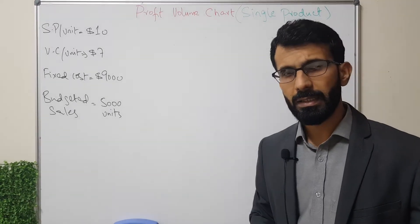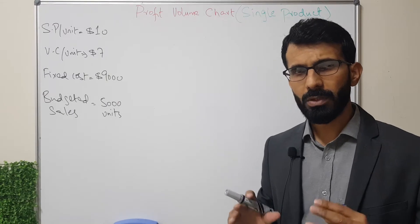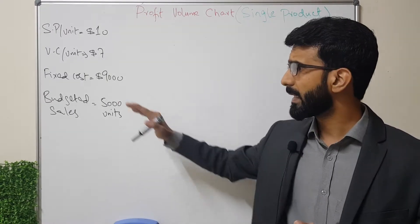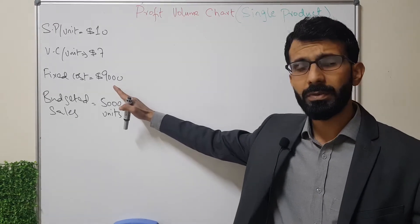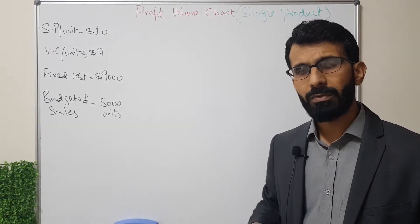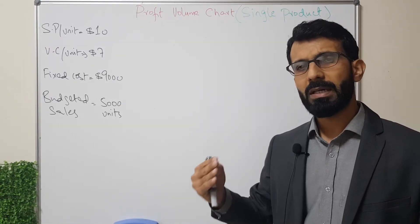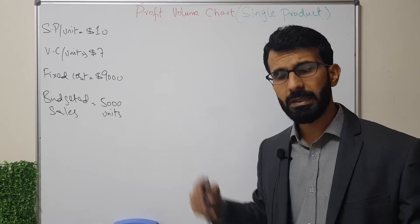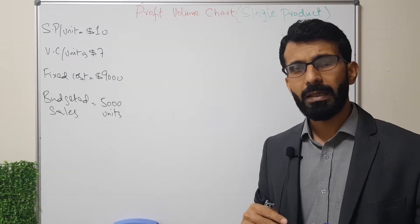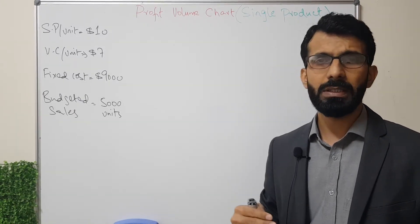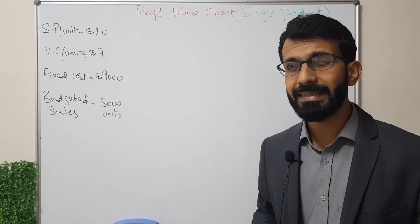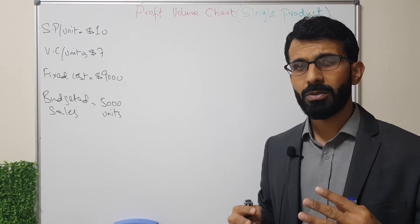That amount of loss will be exactly equal to our fixed cost, which is $9,000. So if the volume of production and sales is zero, we stand at a loss of $9,000. Then if we sell the maximum budgeted number of units — 5,000 — we need to see where our profit stands.